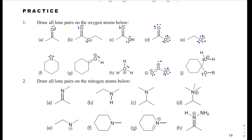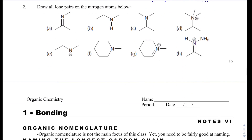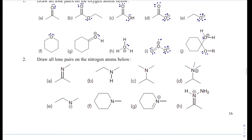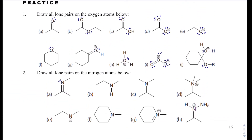Oxygen gets 2 lone pairs when neutral. Nitrogen normally has 1 lone pair when neutral. If nitrogen is positive it loses that lone pair, so it has no lone pairs. If nitrogen is negative it gains 1, giving 2 lone pairs. Neutral nitrogen gets 1 lone pair, and a positively charged nitrogen has no lone pairs.